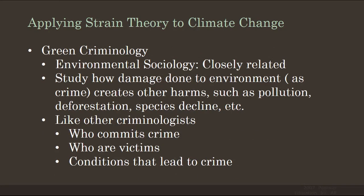When applying strain theory to climate change, we use premises of green sociology and environmental sociology, which are closely related fields. Green criminology studies how damage done to the environment — such as pollution, deforestation, and species decline — leads to harm. The green criminologist, a type of environmental sociologist, looks at how climate change impacts people and how those impacts cause people's behaviors to change. Like other criminologists, the green criminologist studies who commits crimes, who the victims are, the conditions that lead to crime, and the factors that decide who is a victim and who is a criminal.